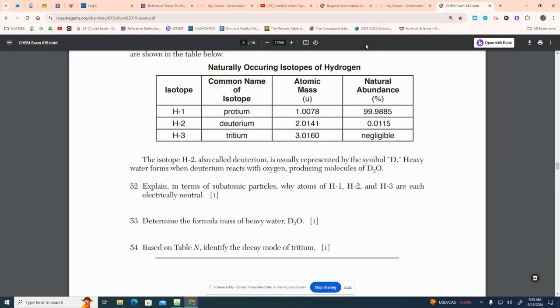So on the board, I pulled up a question from New York State Regents. It was in 2019. Look at question number 52. First of all, let's look at the actual chart that's up here. It says in the first column, isotope. What's an isotope?